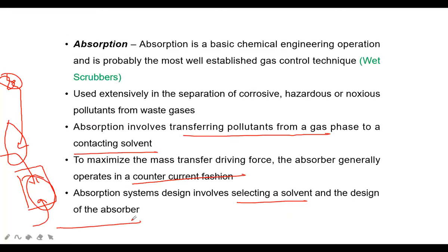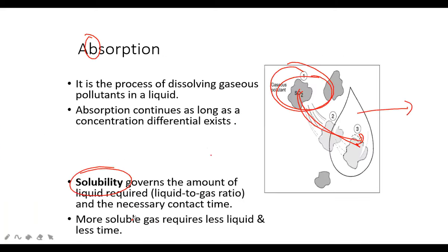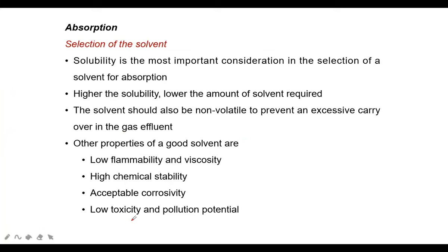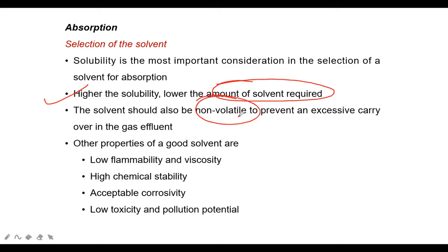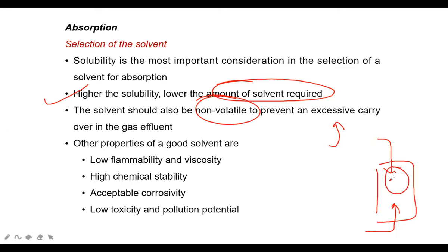Absorption or scrubbing is totally dependent on the selection of solvent. If the solvent selection is not good, solubility is minimum, and the time required is very high, meaning energy consumption is very high. Solubility is the most important consideration - higher solubility means lower amount of solvent required. Moreover, the solvent should be non-volatile, because if the solvent is volatile it will vaporize and get into the vapor phase, making absorption imperfect.